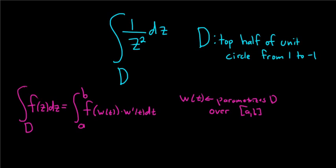So in this problem the contour is the top half of the unit circle from 1 to negative 1. So if we draw that up here, so here's 1 and here's negative 1, so it looks like it's going this way. It's a counter-clockwise orientation, so the orientation is indeed positive.